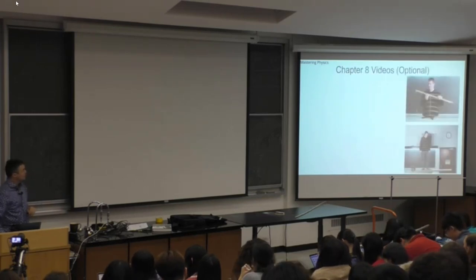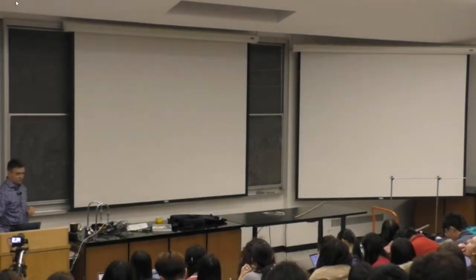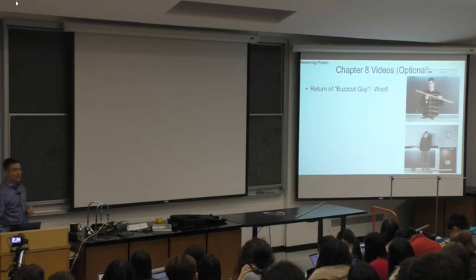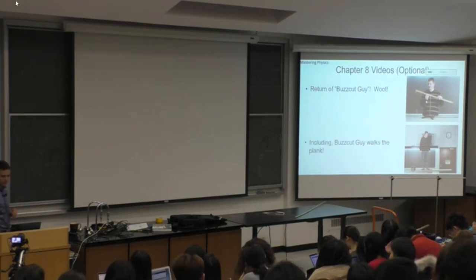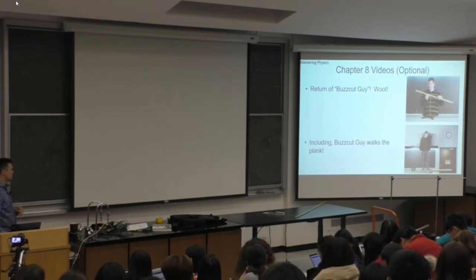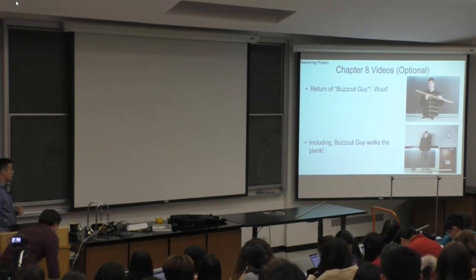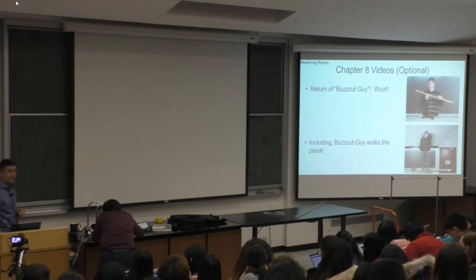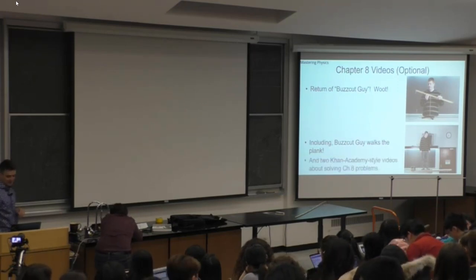There is the return of Buzzcut Guy, who has been doing static equilibrium problems. He also walks the plank. So what you can see is a plank with a mass on one end and a table, and he goes off the end of the table. This is something I haven't been brave enough to do, but you can see how that ends if you check that out.